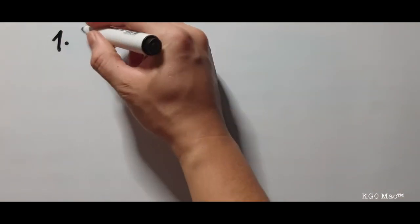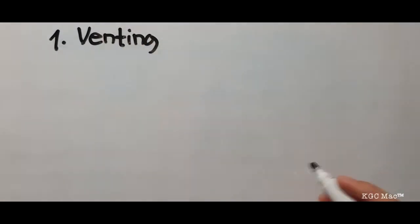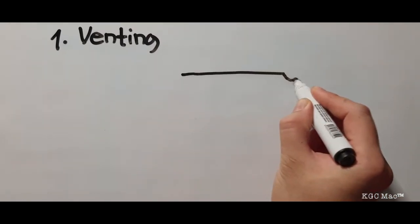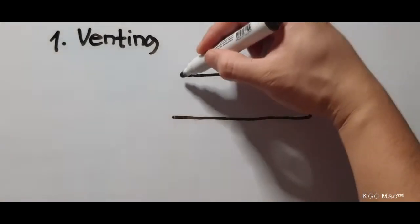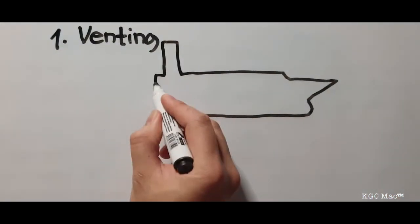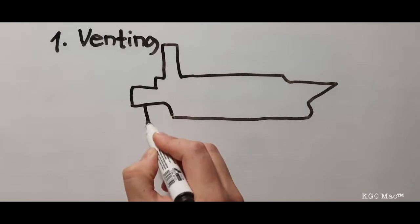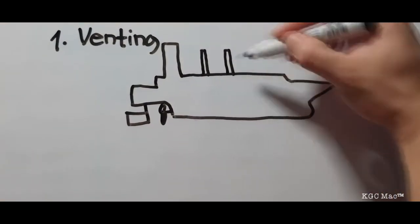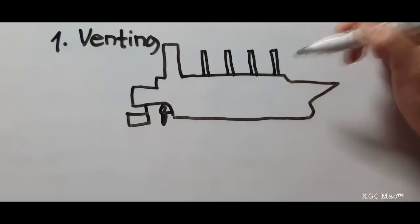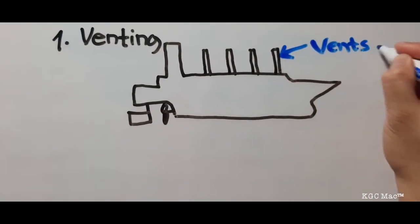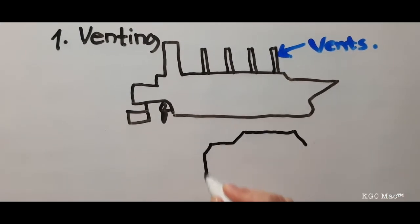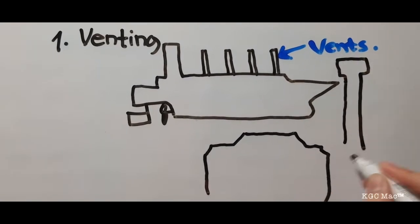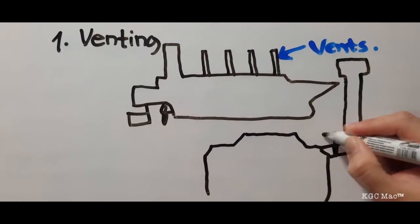Number one, let's talk about venting. Imagine this is your LNG ship. This is what we call the vent mast or mast riser. Let's say this is a cargo tank. Each cargo tank is connected to vent mast number one. Let's say this is the vent mast.